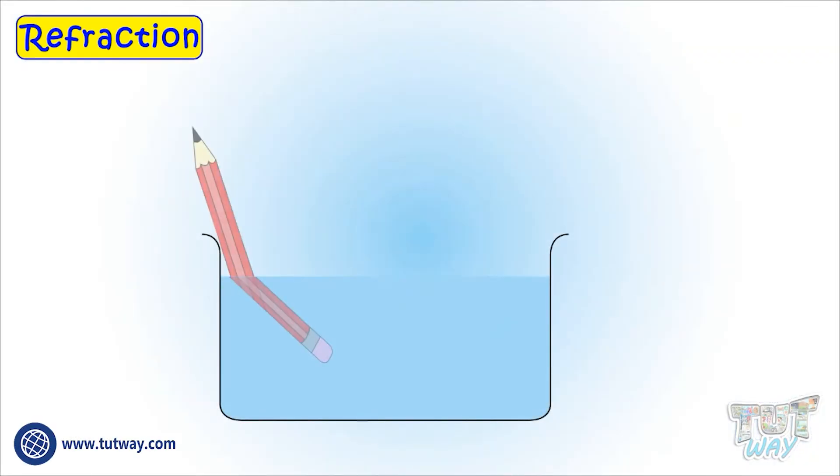Put a pencil in a glass container. We see the image of a pencil as if it is bent. Why does it happen so? Let's try to understand.